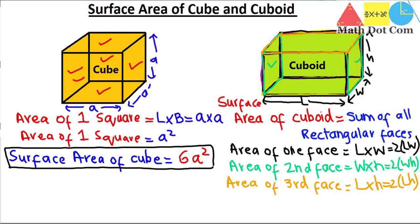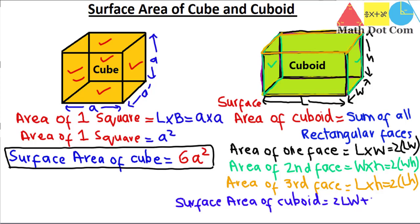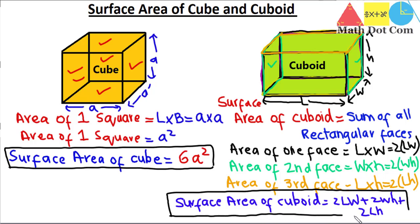So the surface area of cuboid = 2 × length × width + 2 × width × height + 2 × length × height. This is the formula for finding the surface area of the cuboid. Whenever you are given the length, width, and height of a cuboid, just put the values into this formula to get the surface area. That's all from today's lecture. Thank you.